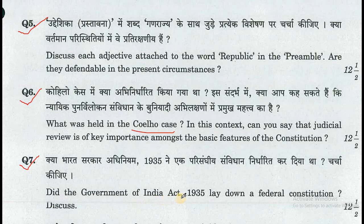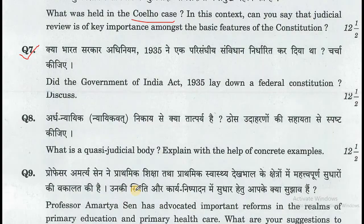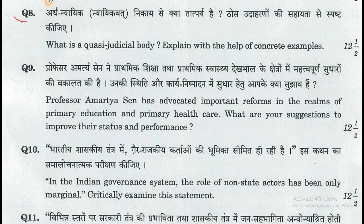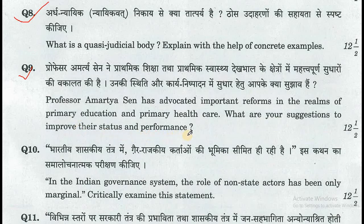Question number 7: Did the Government of India Act, 1935 lay down a federal constitution? Discuss. Question number 8: What is the quasi-judicial word? Explain with the help of concrete examples. Question number 9: Professor Amartya Sen has advocated important reforms in the realms of primary education and primary health care. What are your suggestions to improve their status and performance? Question number 10: In the Indian governance system, the role of non-state actors has been only marginal. Critically examine this statement.